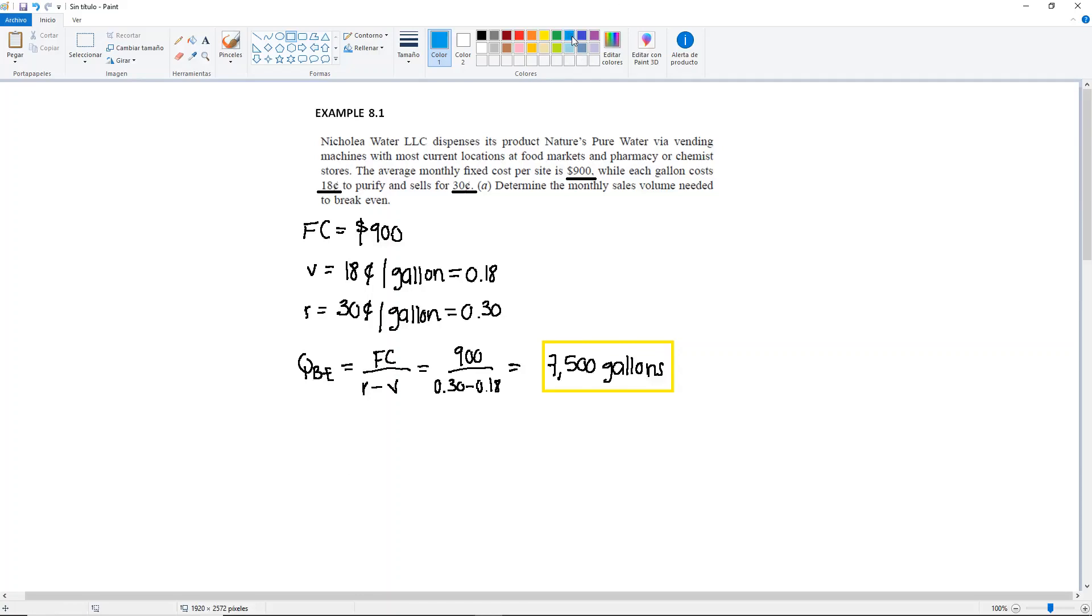I'm going to add one question to this problem. So we know that anything above 7,500 gallons will be a profit. So I want to know what is the profit at Q equal to 8,000 gallons.